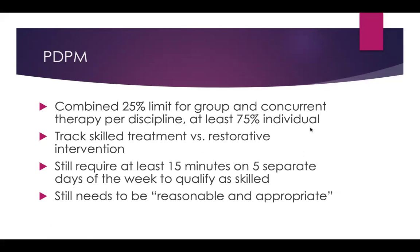PDPM combined 25% limit of group and concurrent therapy per discipline, with at least 75% individually. Concurrent means one therapist treating two people, or two patients divided by half when billing. If you're seeing two patients for 60 minutes, you bill one patient for 30 and the other for 30 — you cannot bill each for 60 minutes. This is used to track skilled treatment versus restorative intervention. You still require at least 15 minutes on five separate days of the week to qualify as skilled intervention, and it must be reasonable and appropriate.